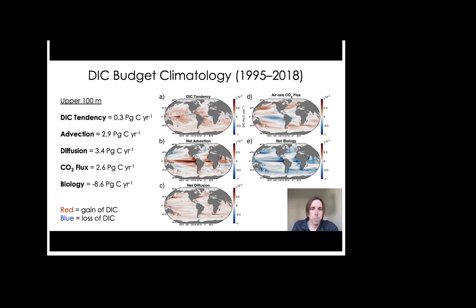So starting with panel A, which is the DIC tendency, we see that there's an increase of DIC in the tropics, the subtropics, and in the Southern Ocean.